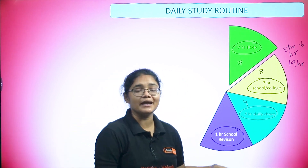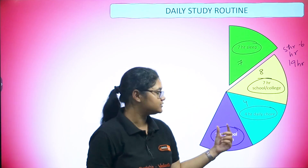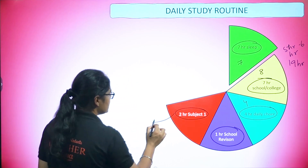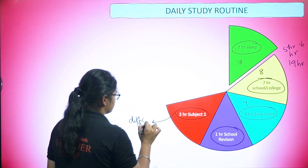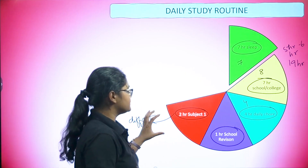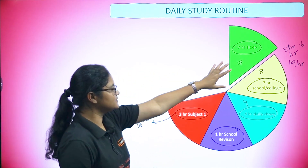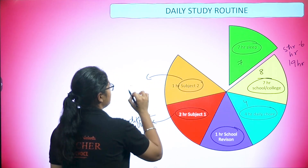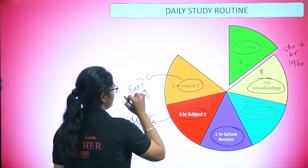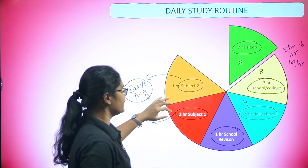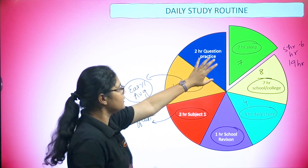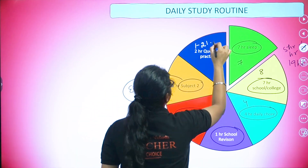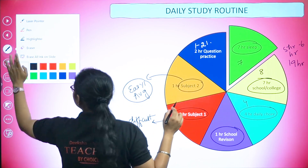Here's the breakdown of those five to six hours. First, always revise whatever was taught in school — spending around one hour on this keeps you up to date and prevents backlogs. Next, dedicate two hours to Subject 1, which should be a difficult subject. Then one hour for Subject 2, which can be an easy or average subject. This accounts for about four of your available hours.